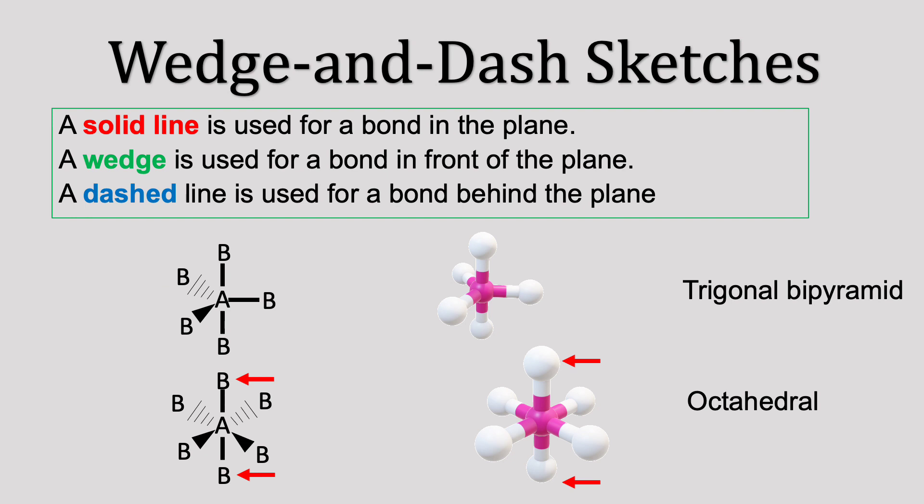For the octahedral, there are two solid lines flat on the screen. From this perspective, they are above and below the central atom in the 3D model.